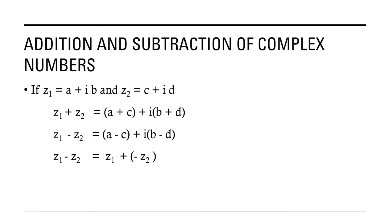The next one is the difference between two complex numbers. It is given by z1 minus z2 is equal to a minus c plus i into b minus d. In other words, we can also write z1 minus z2 as z1 plus bracket minus z2.